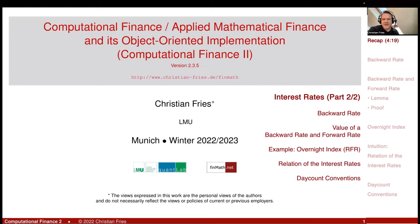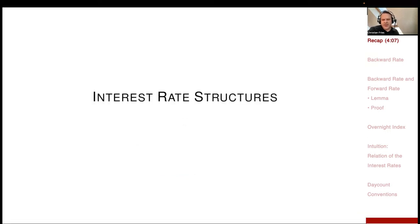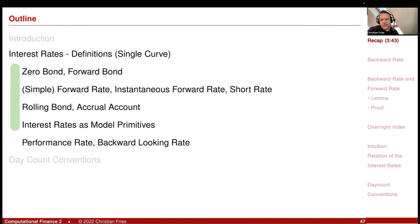Welcome to Applied Mathematical Finance. We started our section on interest rates, covering interest rate structures with a small introduction. Then we moved to a collection of definitions. We defined the zero coupon bond and, based on the zero coupon bond, all kinds of interest rates. Today I would like to continue and conclude this session with the backward looking rate, which has gained importance recently. But before I do this, let me give a short recap of what we have done so far.